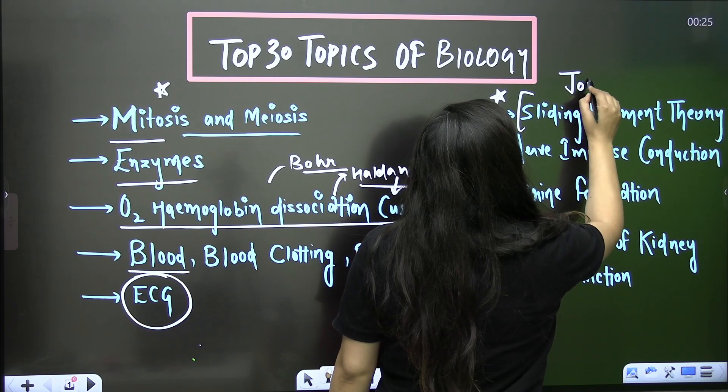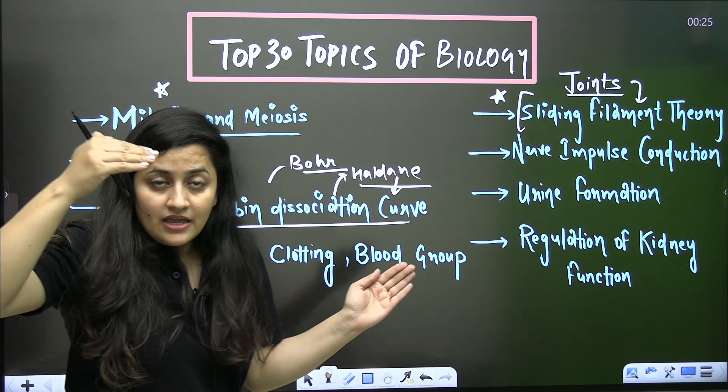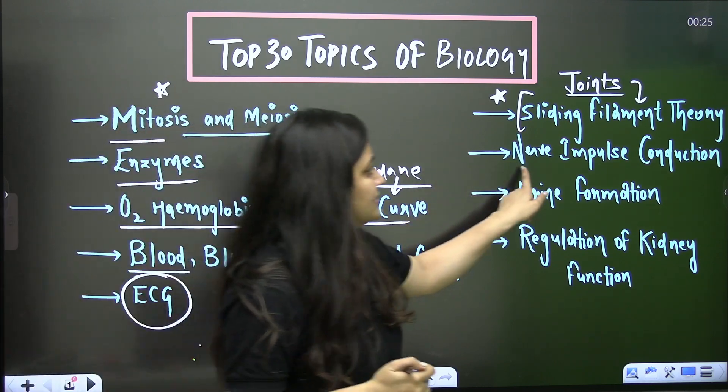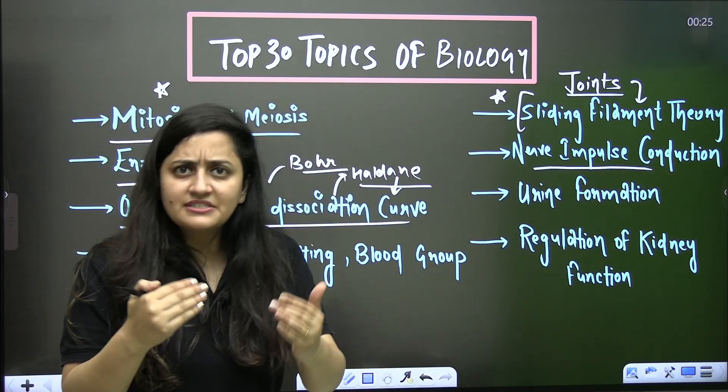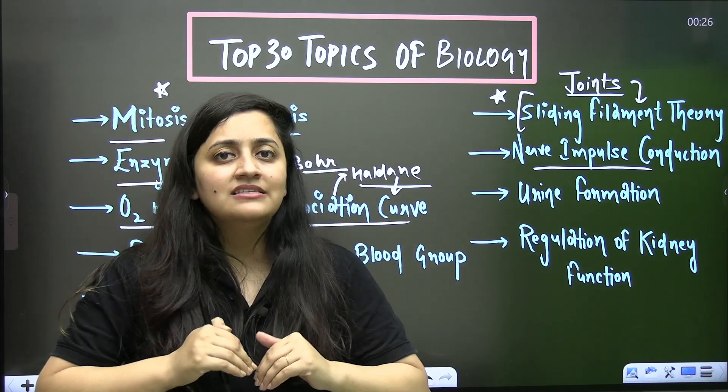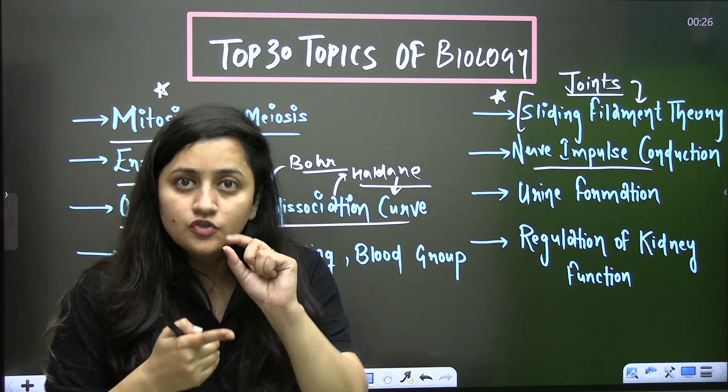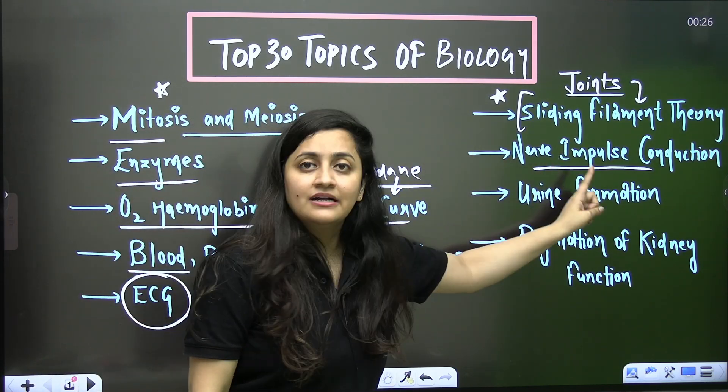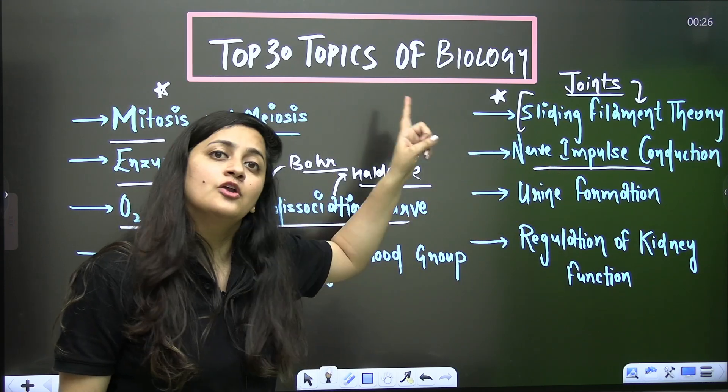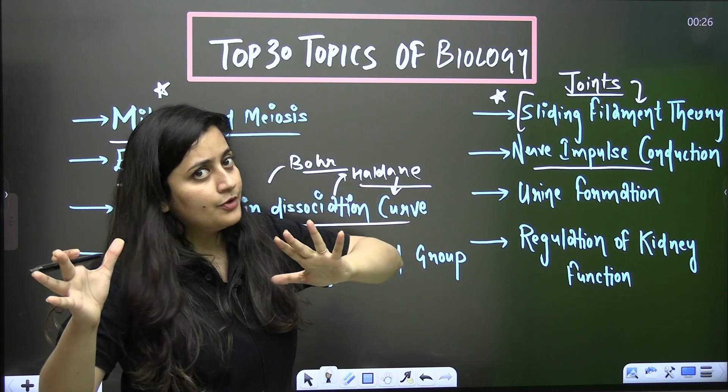And yes, here also you guys can also add the joints from this particular chapter. Then in neural control and coordination, it is the nerve impulse conduction where we discuss the ionic theory. That is very important. And yes, because in your current syllabus, in your reduced syllabus, they didn't mention the eye and ear. So definitely nerve impulse conduction is going to be there. They are going to ask you the question from this part. Remember that sodium and the potassium movement - that is going to be the most expected question.